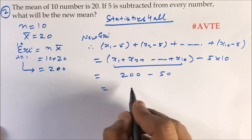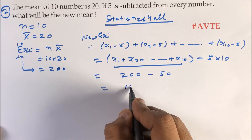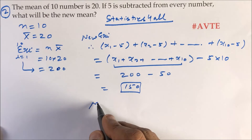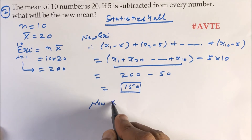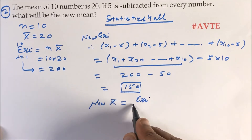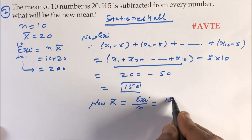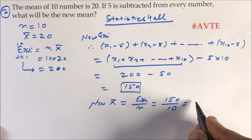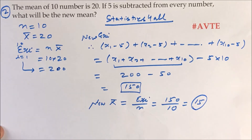So 200 minus 50 gives us a new sum of 150. To find the new mean: new mean = sigma xi upon n, that is 150 upon 10, which equals 15.